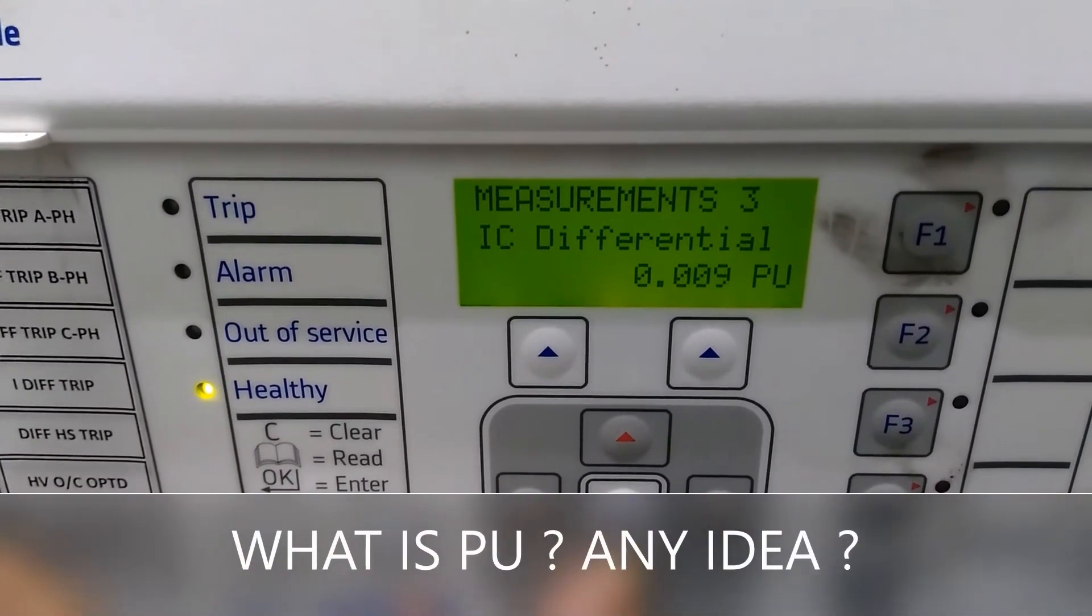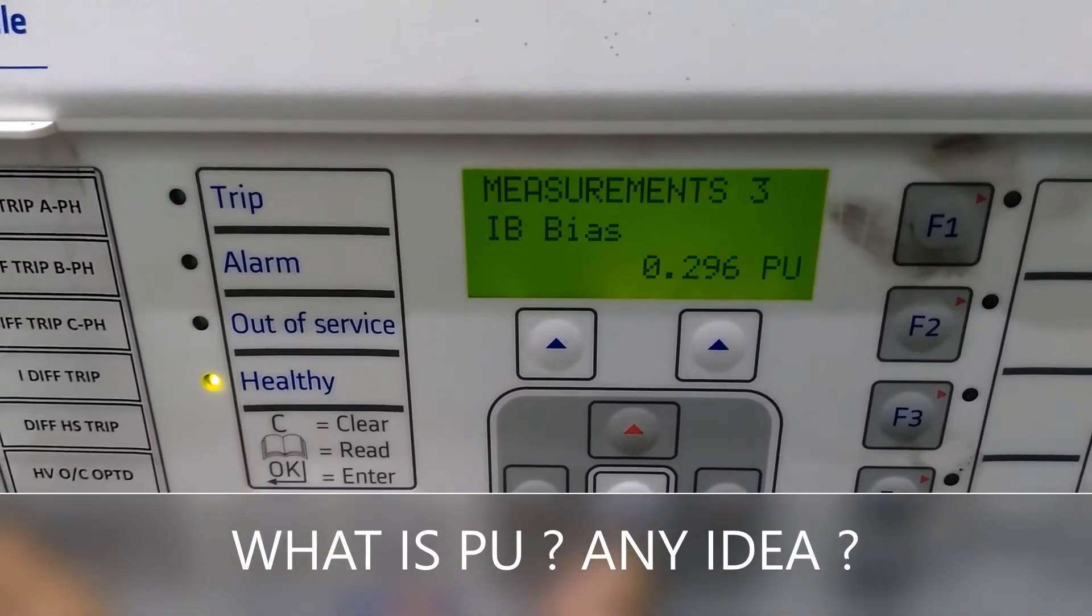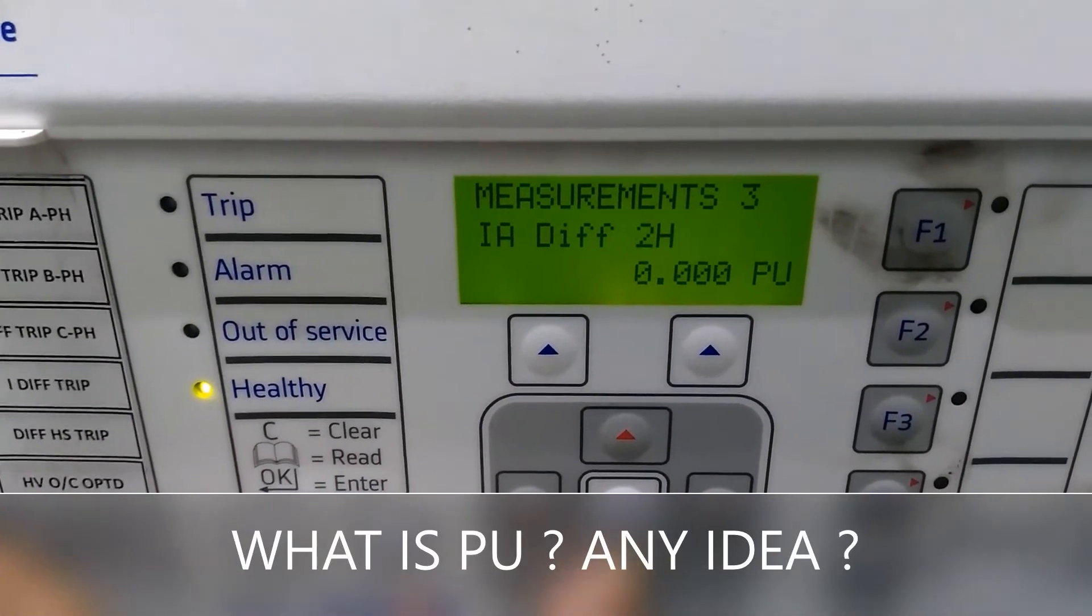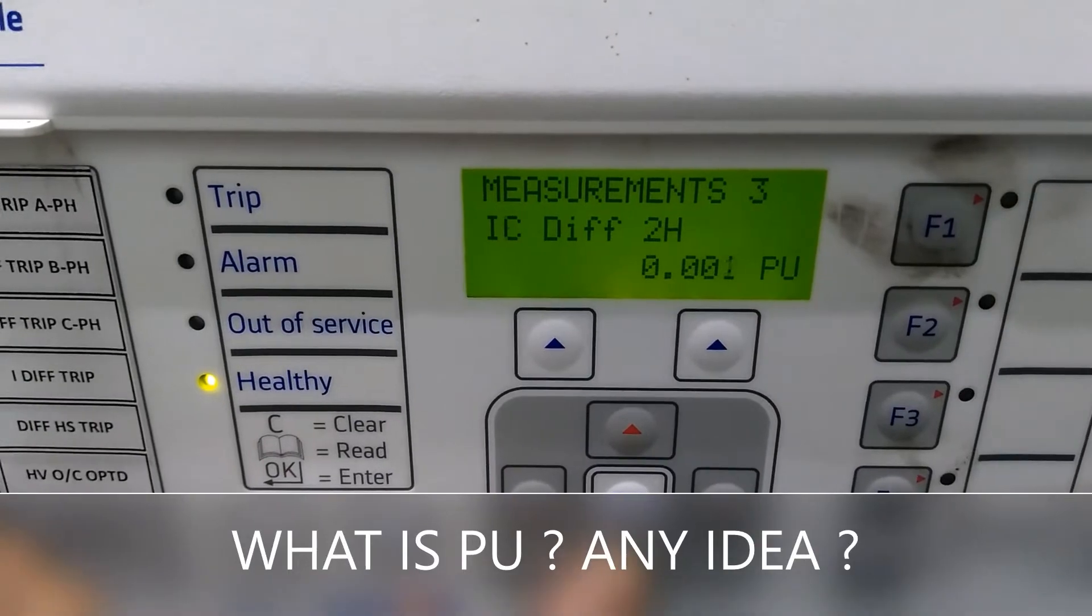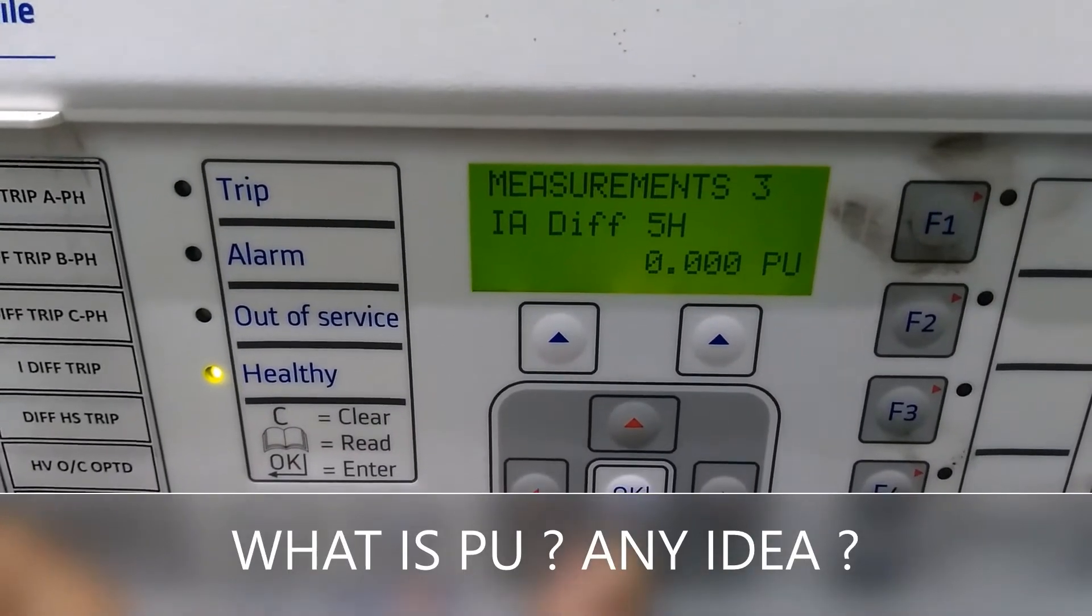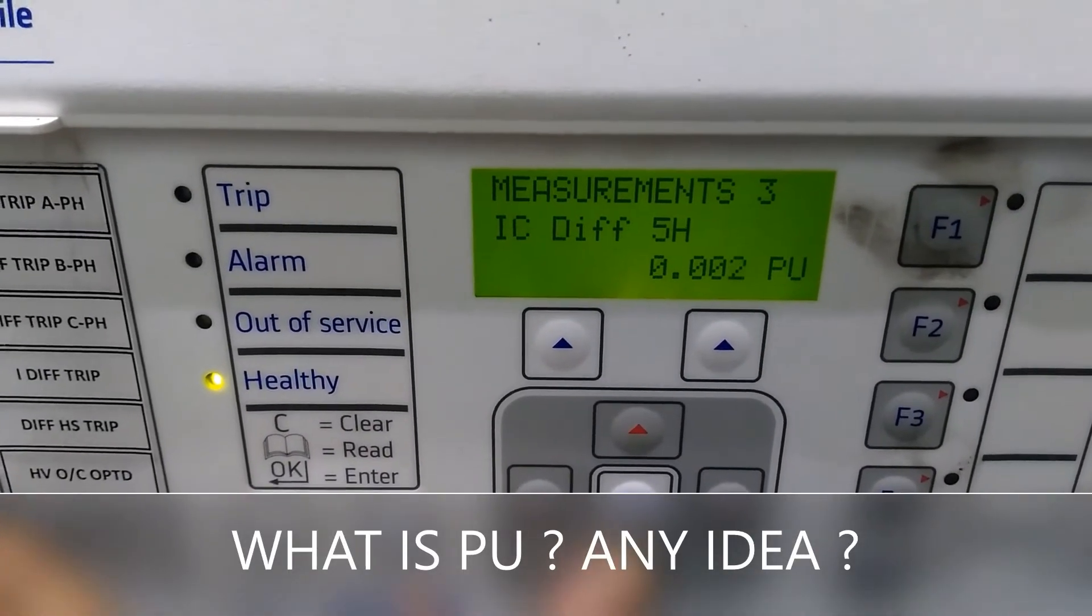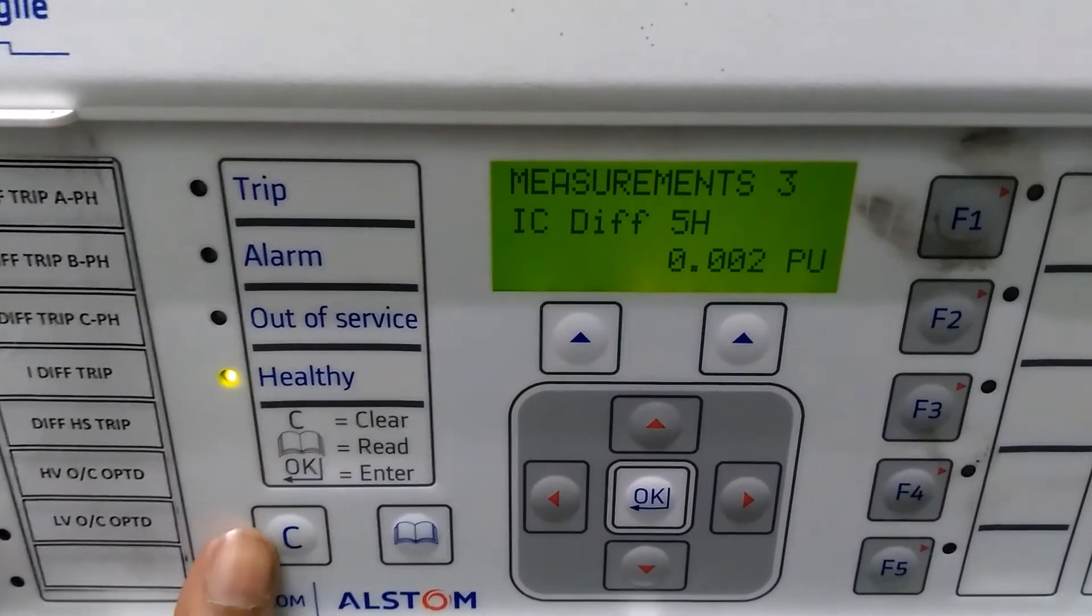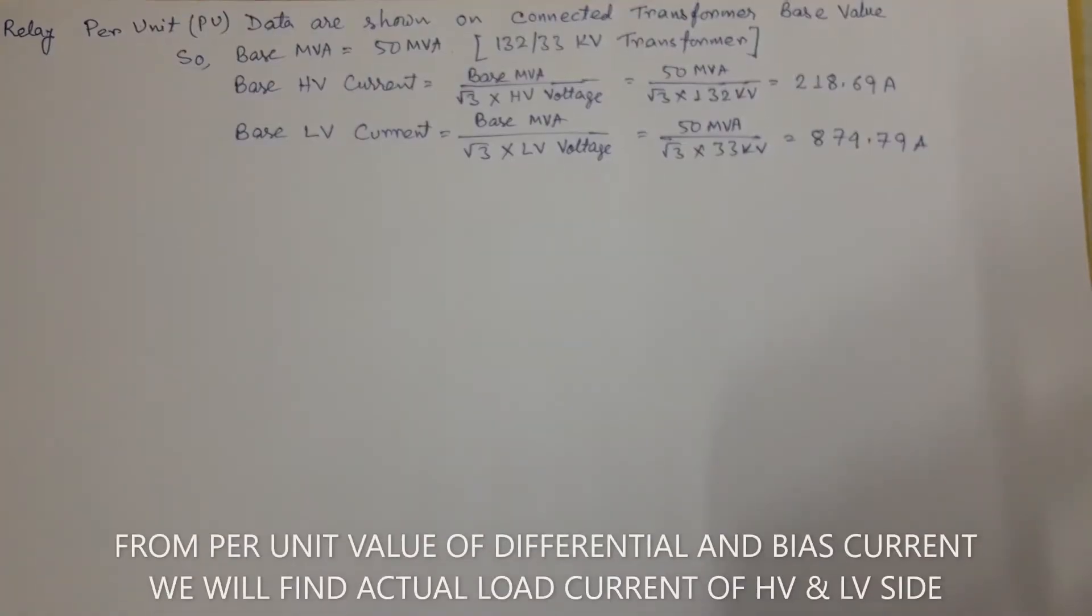Yes, you are correct. The values shown in relay display are in per unit values. Now this relay is connected with a 15V transformer, and we will find actual load current of HV and LV side from display data relay.